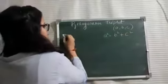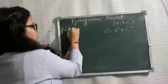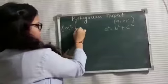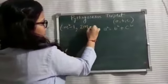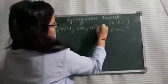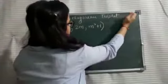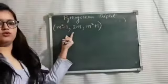The general form of Pythagorean triplet is M square minus 1, 2M and M square plus 1. This is the general form of Pythagorean triplet.